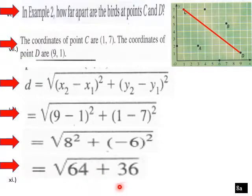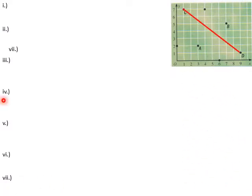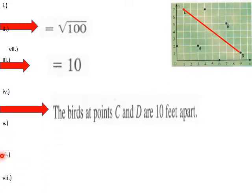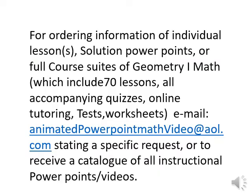That equals the square root of 100, which is 10. So the distance here would be 10 feet. That would be the solution. And that's lesson 4.4 part 2. If you need any more materials, email me here. Thank you very much.